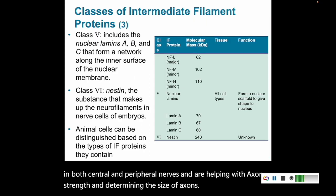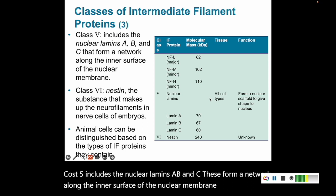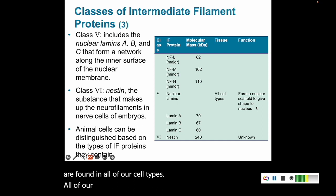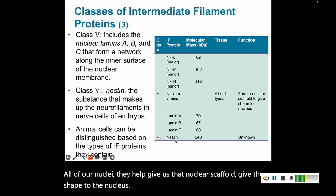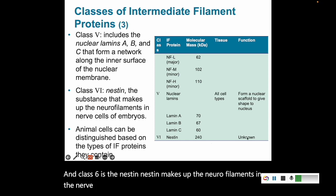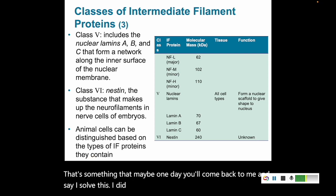Class five includes the nuclear lamins A, B, and C. These form a network along the inner surface of the nuclear membrane, so they are found in all of our cell types and all of our nuclei. They help give us that nuclear scaffold and give shape to the nucleus. Class six is nestin — nestin makes up the nerve filaments in the nerve cells of embryos, but a lot of their function is unknown. That's something that maybe one day you'll come back and say 'I solved this, I did this research and now I can tell you what this does.'